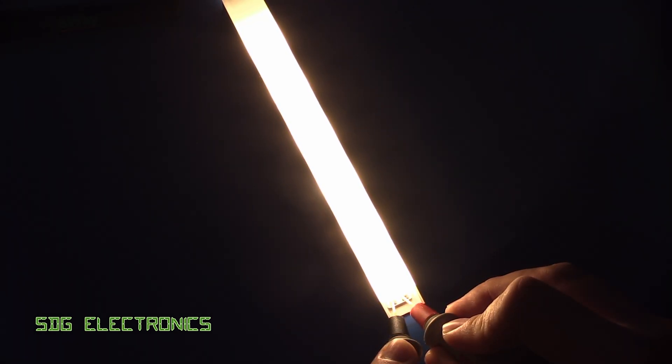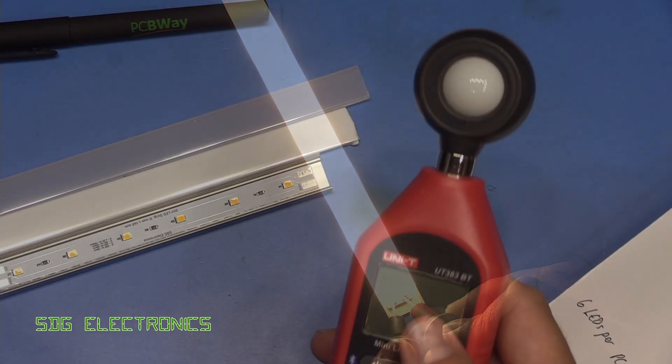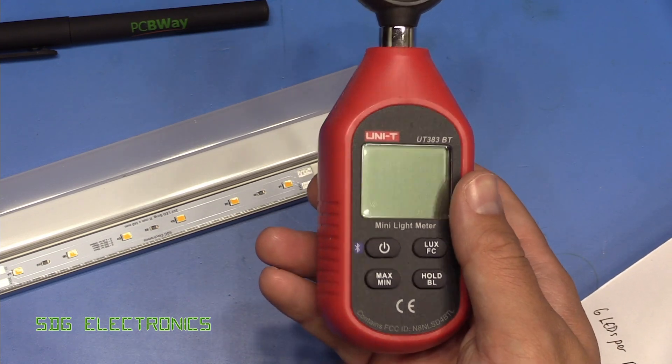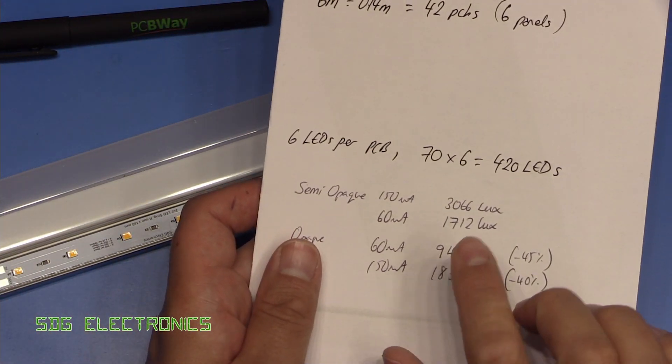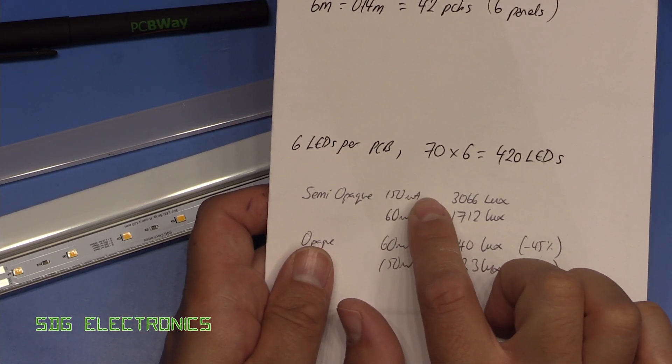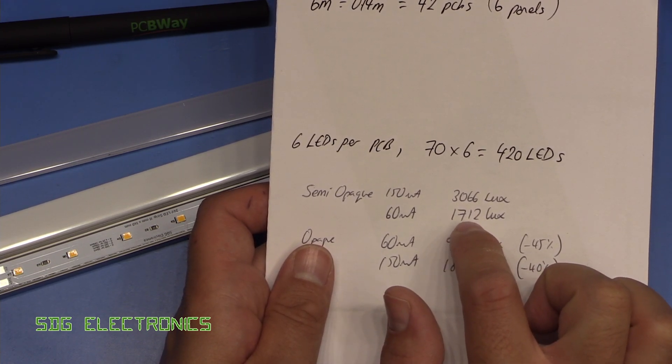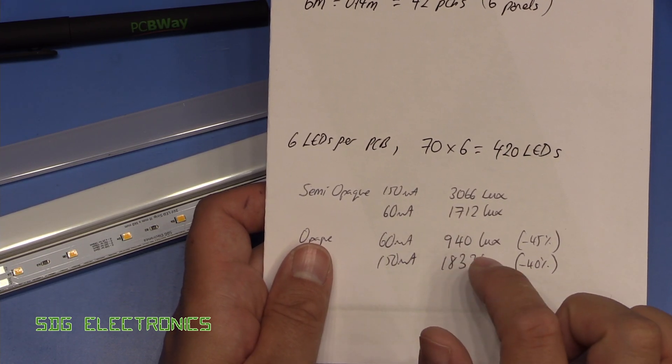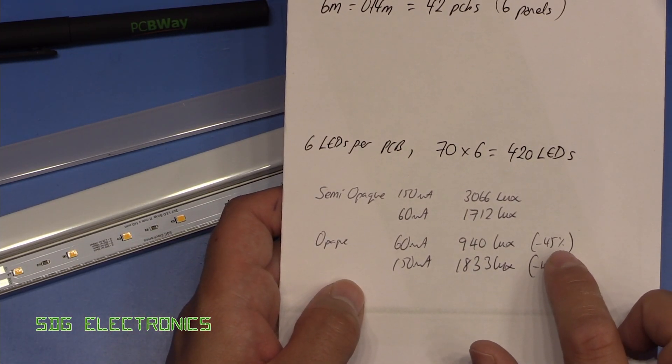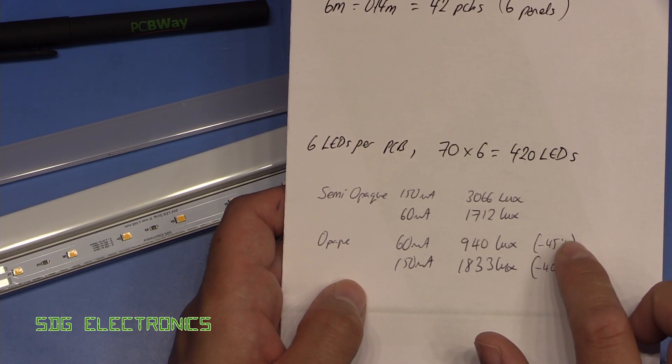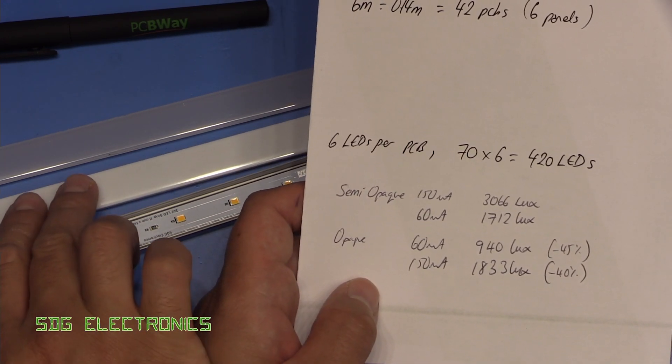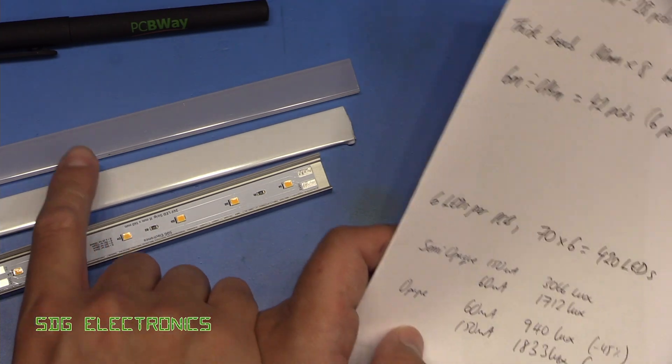So I've just measured the light output with the two types of diffuser with the Unity light meter at a distance of 250 millimetres. We got 3066 lux from the semi-opaque diffuser at 150 milliamps, dropping down to about 1712 at 60 milliamps. But when we swap it out for the opaque, we see quite a drastic decrease in light. We're losing about 40 to 45% of our light through this diffuser compared to this one. So significant energy loss.